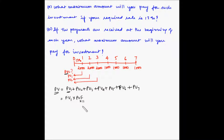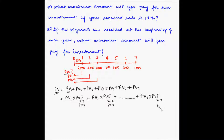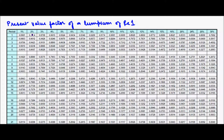So PV1 equals FV1 times the present value factor where N=1 and I=13, plus FV2 times the present value factor where N=2 and I=13, continuing up to FV7 times the present value factor where N=7 and I=13. Now let us look at the table for present value factors of a lump sum. In our case we have periods 1 through 7 and the rate of interest is 13%.